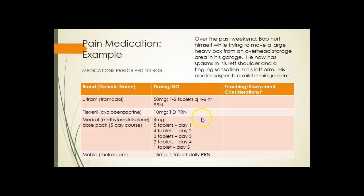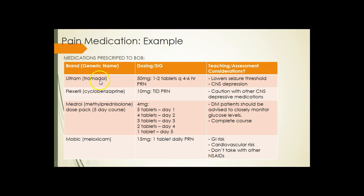Here's an example — poor Bob has a lot of medications. Make sure you know the teaching and assessment considerations. Tramadol lowers the seizure threshold and causes CNS depression. Flexeril is a muscle relaxant, which should be used with caution alongside other CNS depressants. The Medrol dose pack is a steroid — diabetic patients should closely monitor glucose levels and must complete the full course without stopping abruptly, because the adrenal glands are slow to ramp up their own steroid production.